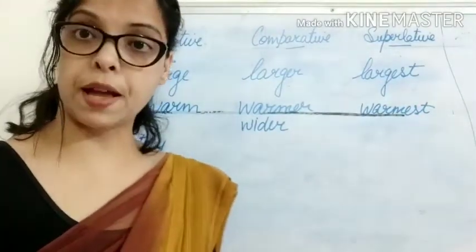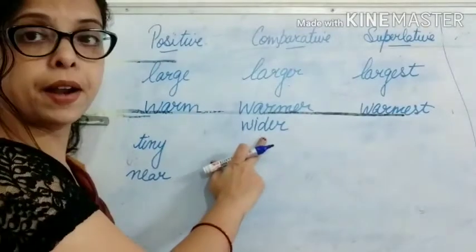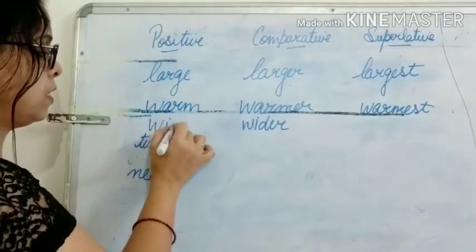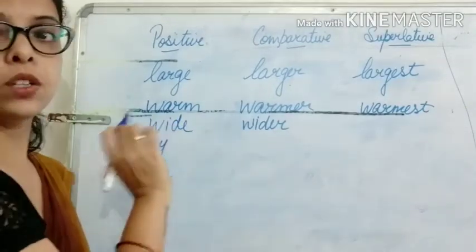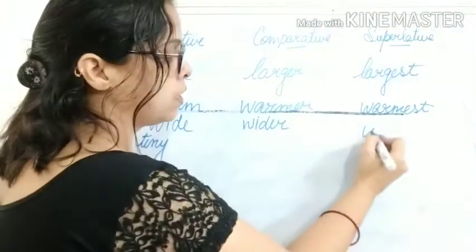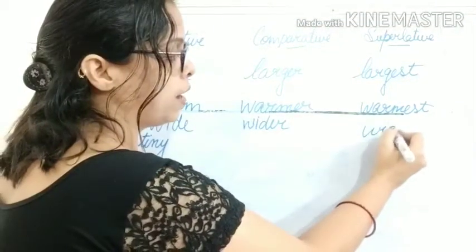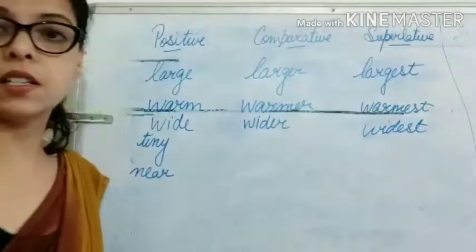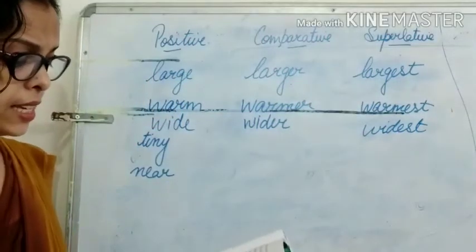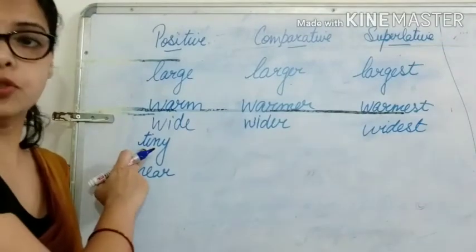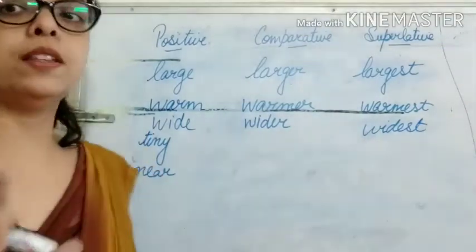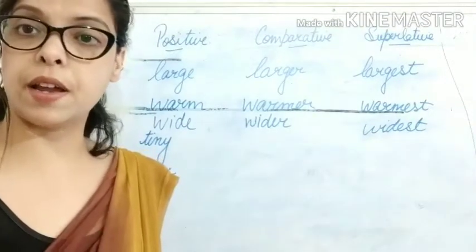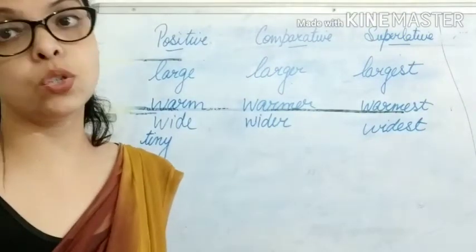Next, 'wider' — that is the comparative form, so we write it in the comparative column. The positive form of 'wider' is 'wide,' and the superlative form is 'widest.' Now next is 'tiny' — the positive form. When a word ends in Y, we remove the Y and add IER for comparative and IEST for superlative.